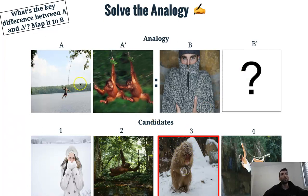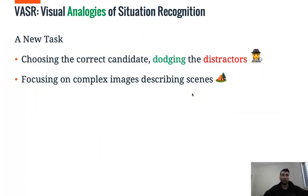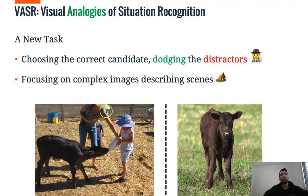And one way to think about it is to find the main difference between A and A prime, man changed to monkey, and apply it to B. So this is VASR. It's a new task which involves choosing the correct candidate and dodging the distractors. And we focus on complex images describing scenes.